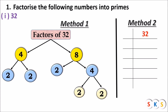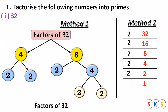Method 2: We divide 32 by prime numbers like 2, 3, 5, 7. 32 is divisible by 2: 32 ÷ 2 = 16. Divide 16 by 2: gives 8. Divide 8 by 2: gives 4. Divide 4 by 2: gives 2. Divide 2 by 2: gives 1. All factors are prime, so the prime factorization of 32 = 2 × 2 × 2 × 2 × 2.